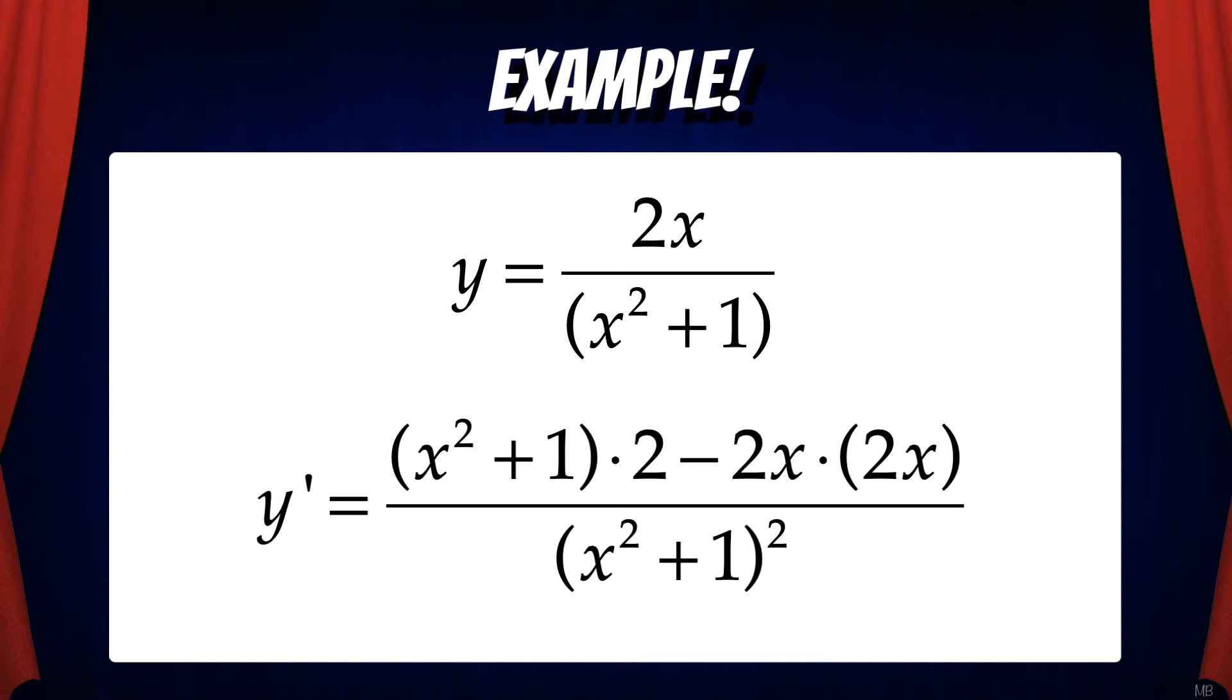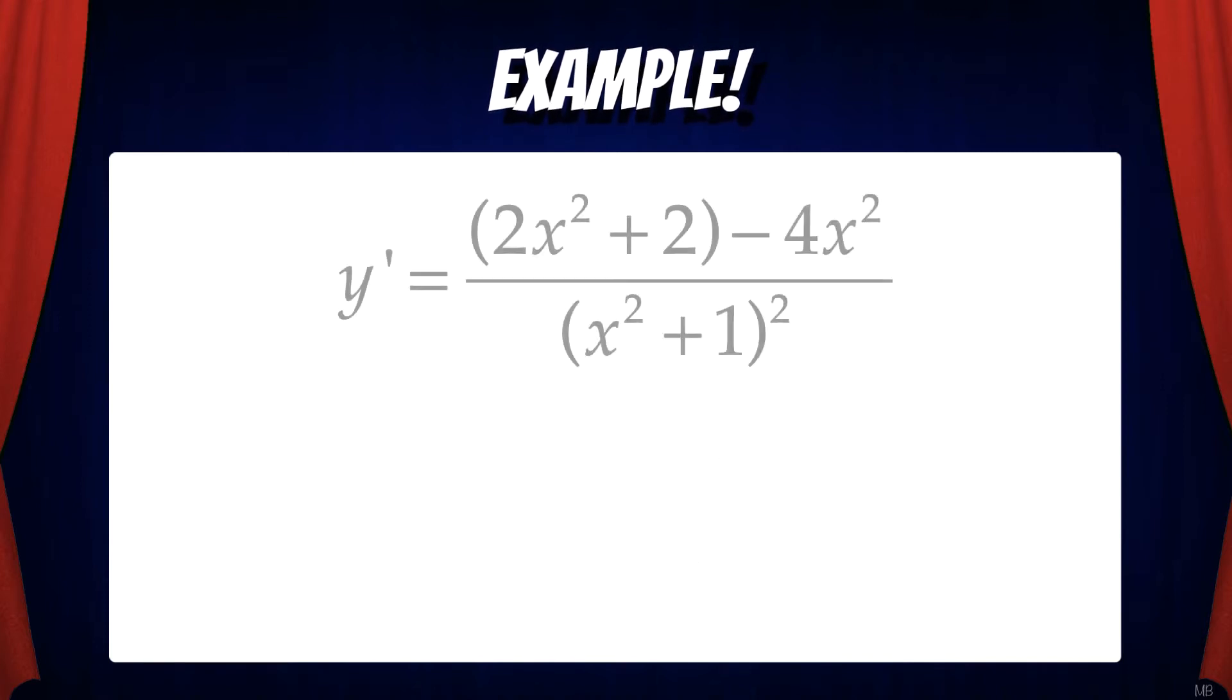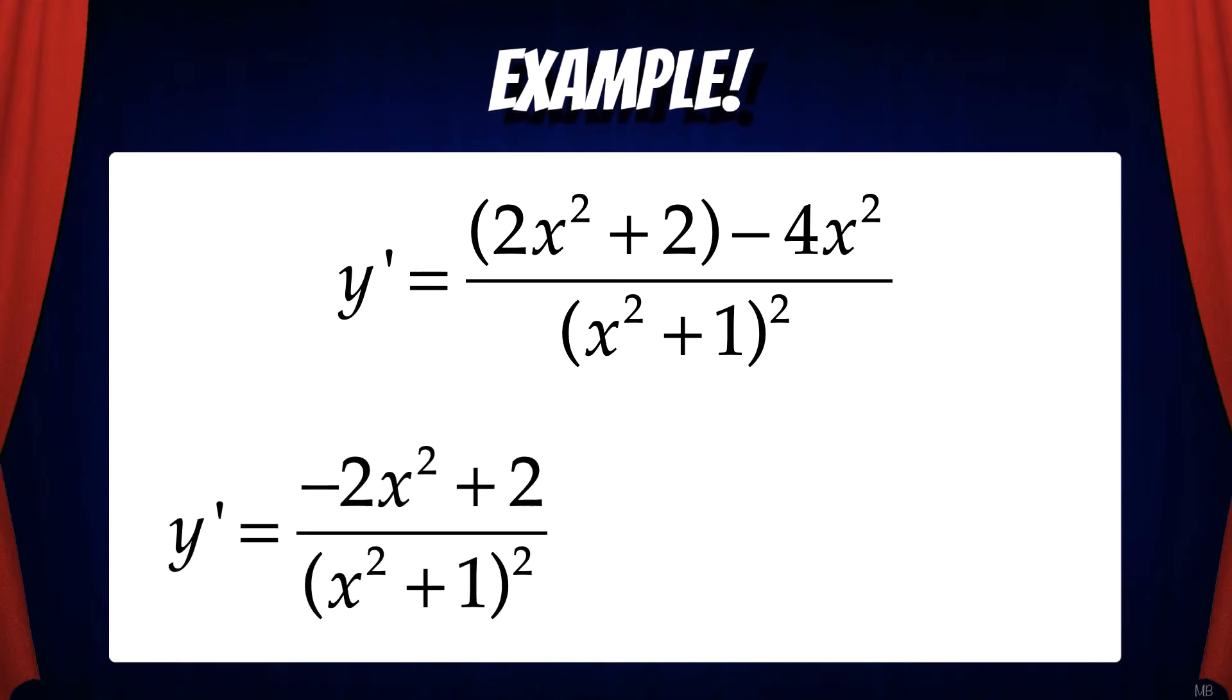This is technically correct so we could stop here, but let's clean this up a bit. By simplifying the numerator, we get 2x squared plus 2 minus 4x squared. And this further simplifies to negative 2x squared plus 2. We can even go one step further by factoring out a negative 2 from the numerator.